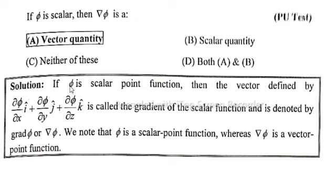is the solution. If phi is a scalar point function, then the vector defined by partial phi over partial x i unit vector plus partial phi over partial y j unit vector plus partial phi over partial z k unit vector...